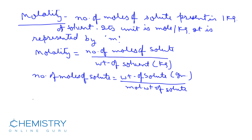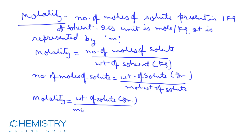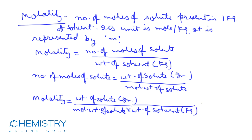As a whole, the formula for molality is: weight of solute in grams divided by molecular weight of solute, all divided by weight of solvent in kg. Its unit is mole per kg.